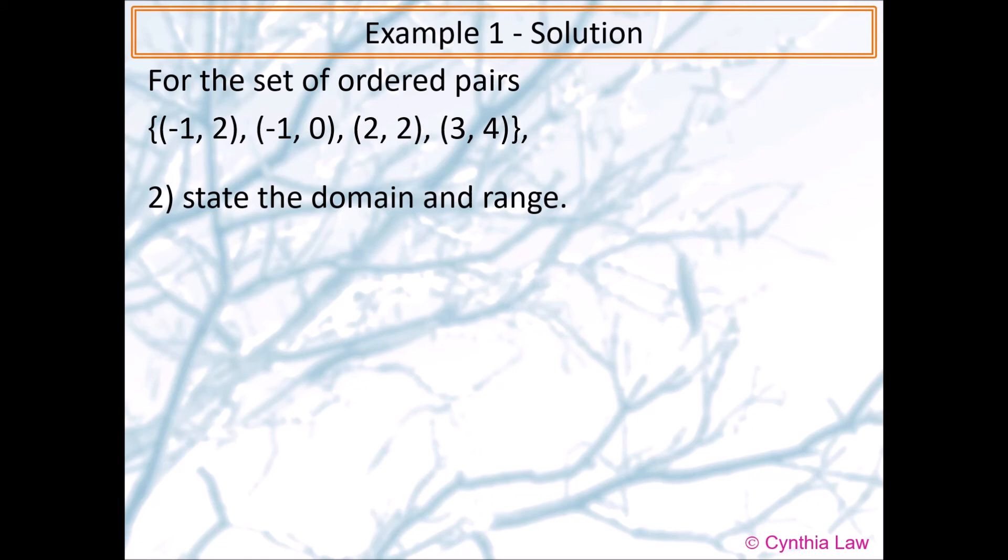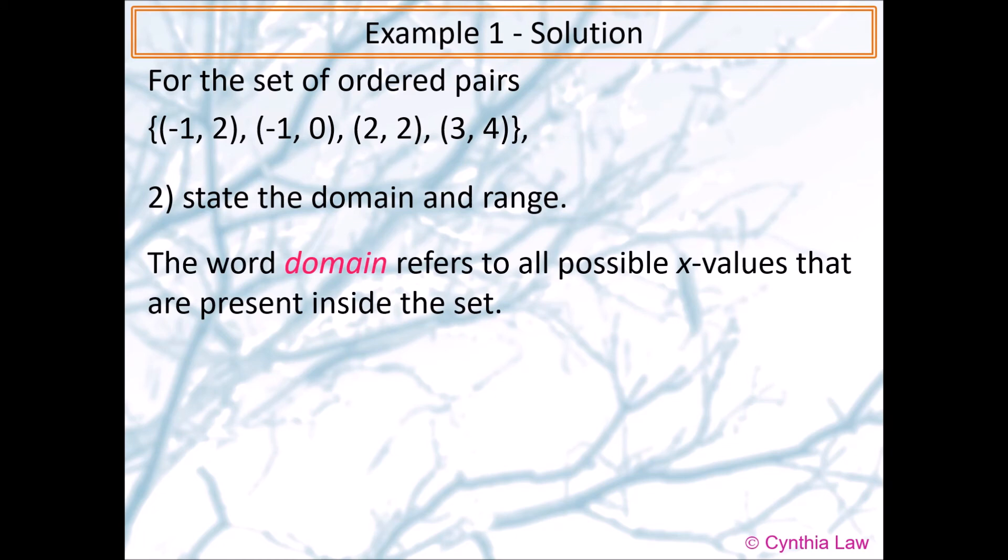Now let's state the domain and range. So far I haven't described the definition at all. So let's look at the definition. The word domain refers to all possible x-values that are present inside the set. So look at our four points. What are the possible x-coordinates? We can only have negative one, two, or three. Only three numbers.